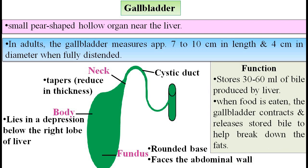The gallbladder stores 30 to 60 ml of bile produced by the liver. When food is eaten, the gallbladder contracts and releases stored bile to help break down fats, as mentioned earlier.